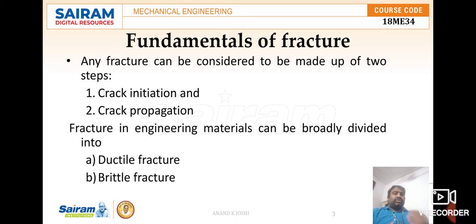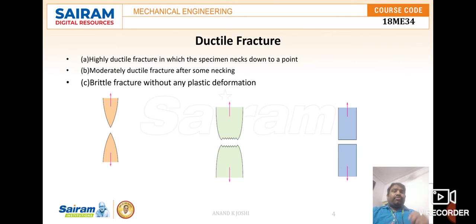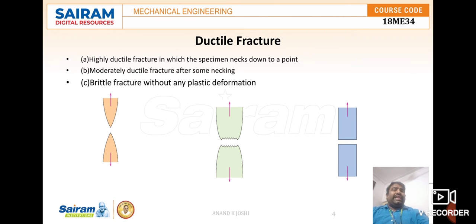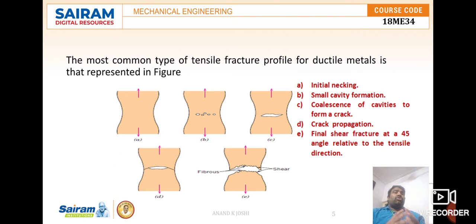The various stages of ductile fracture are: first, fully ductile fracture in which the specimen necks down to a point; second, moderately ductile fracture after some necking; and third, brittle fracture without any plastic deformation. The most common type of tensile fracture profile for a ductile material is represented step by step.